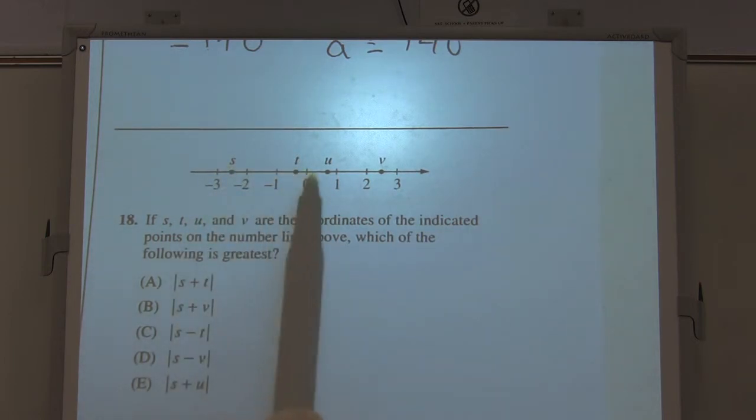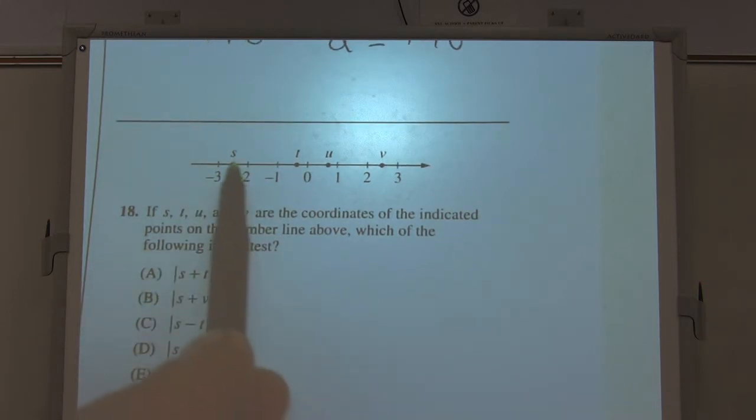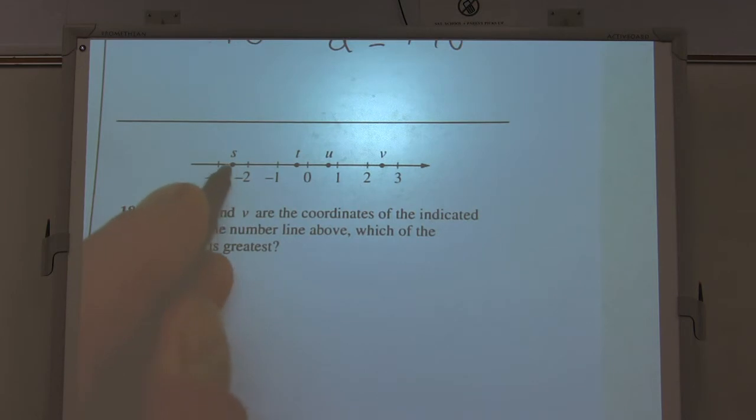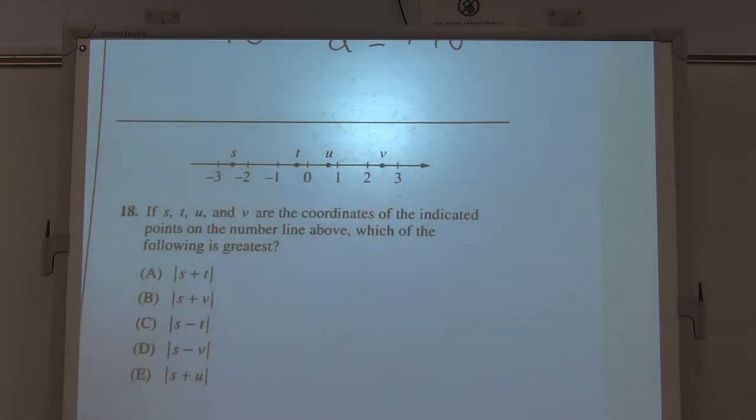So between S and T. S and T. That doesn't look too far. S and V. S plus V. Okay, S plus V. Well, let's just think of this, you guys. S is at, looks like about negative 2.5, and V is at positive 2.5. So if I add them together right here, negative 2.5 plus 2.5, I get zero, and the absolute value of zero is zero.